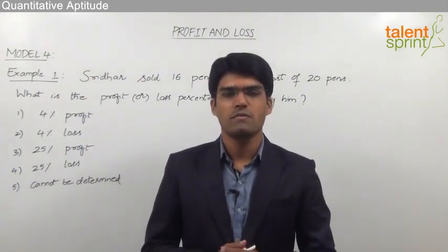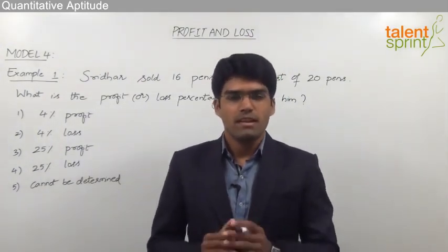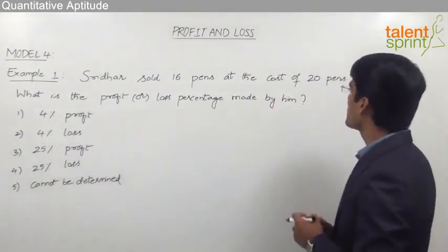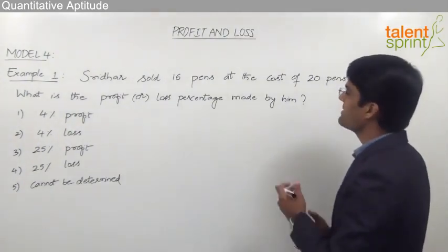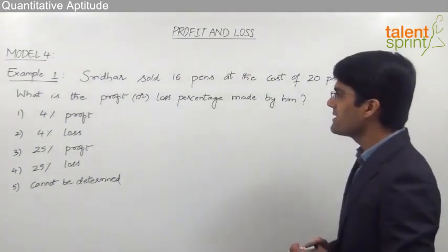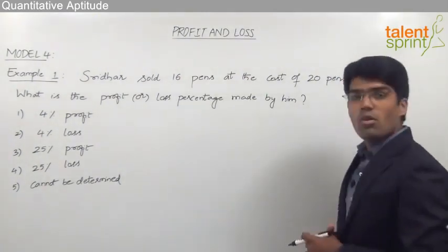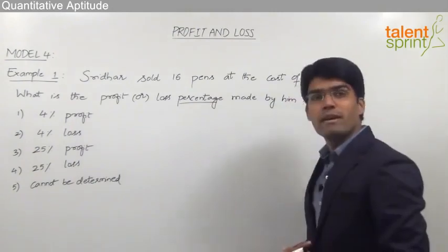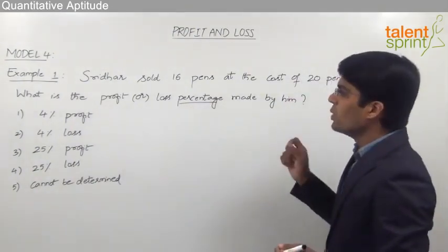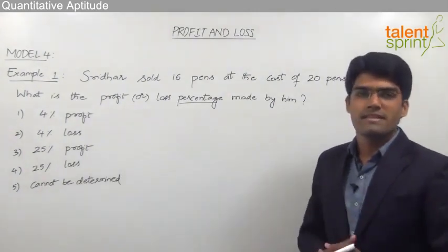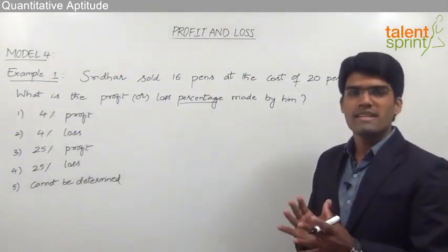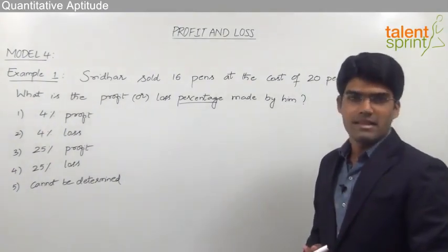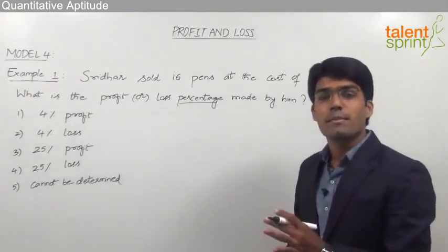Let us now discuss the fourth model from Profit and Loss, which is again a very popular question in bank exams. The question is: Sridhar sold 16 pens at the cost of 20 pens. What is the profit or loss percentage made by him? Nowhere in the question is the cost price or selling price of the pens specified. Some students have a misconception that because the cost price and selling price have not been given, we cannot find the profit or loss percentage, and hence they mark the answer as 'cannot be determined' — which is absolutely wrong.